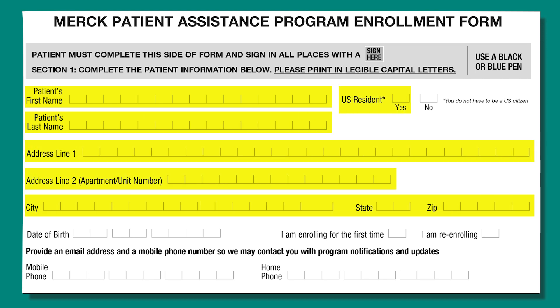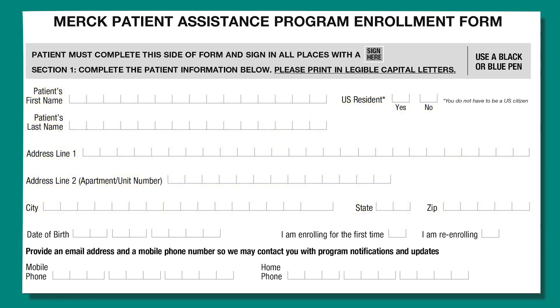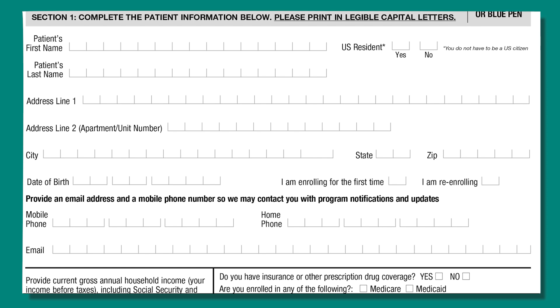Remember to check the box if you reside in the U.S. or in a territory of the U.S. and have a mailing address in the U.S. or a territory of the U.S. You do not have to be a U.S. citizen. Fill in your cell phone and/or your home phone number and date of birth.